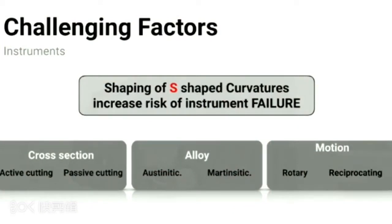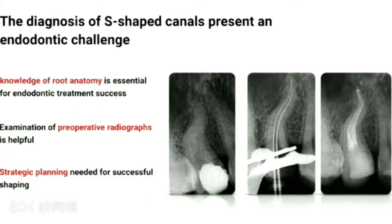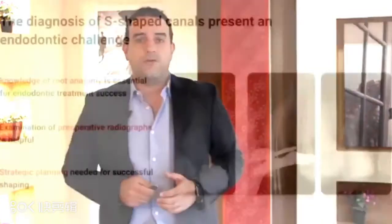With the variety we have in instruments — active or passive cutting instruments, martensitic or austenitic alloys, and the motion either rotary or reciprocating — there should be a way for managing the S-shaped curvature. The first step is knowledge: knowing the anatomy, then good interpretation of the periapical radiograph, which allows for strategic planning of the sequence, giving us a safer root canal preparation.